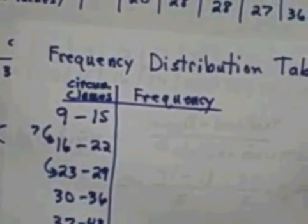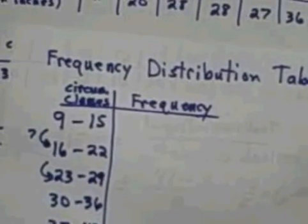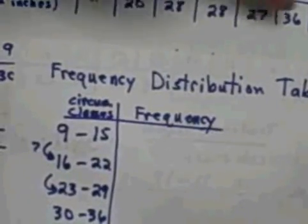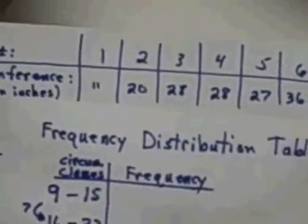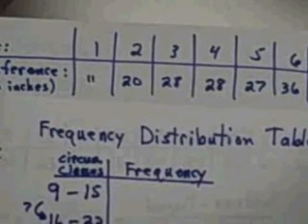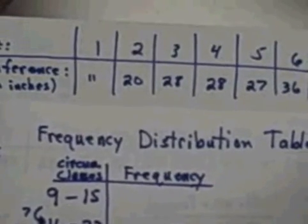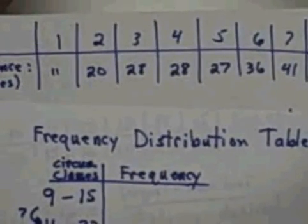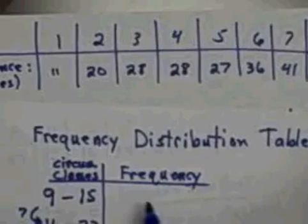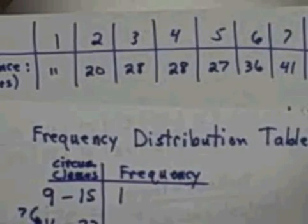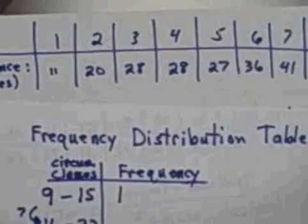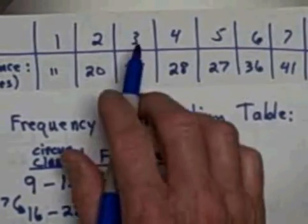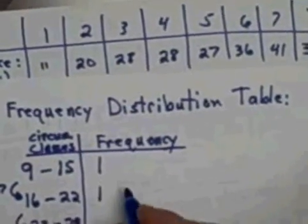Well, it is time to construct the distribution table itself in the frequency column. And all we do is make little tick marks as we go through each one and see where it fits. So let's see if we can get both of these on the screen. First tree 11, 11 fits in my first class. I'll put a tick mark there. The second tree was 20. So that's going to go in my second grouping here. My third tree was 28. That's going to go in my third grouping.